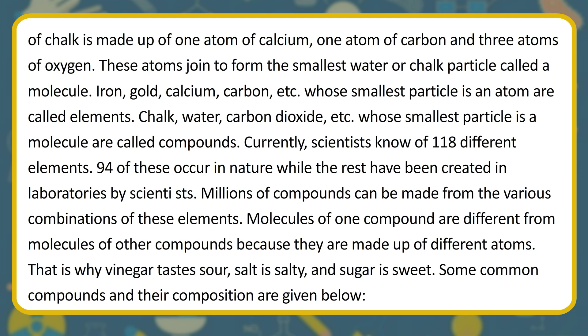Iron, gold, calcium, carbon, etc., whose smallest particle is an atom, are called elements. Chalk, water, carbon dioxide, etc., whose smallest particle is a molecule, are called compounds. Currently, scientists know of 118 different elements; 94 of these occur in nature while the rest have been created in laboratories. Millions of compounds can be made from the various combinations of these elements.